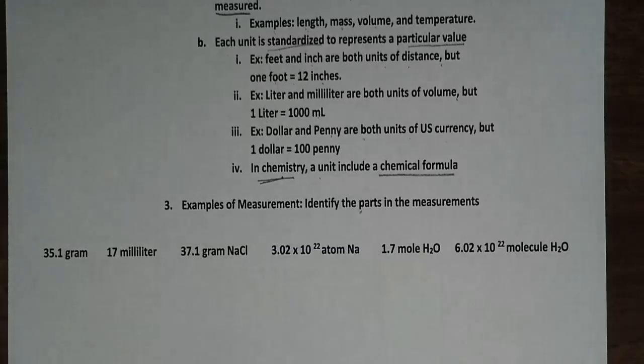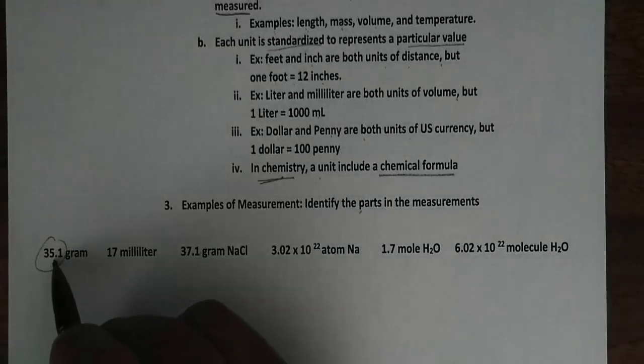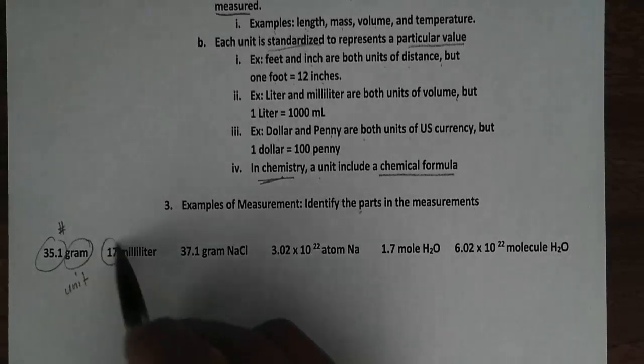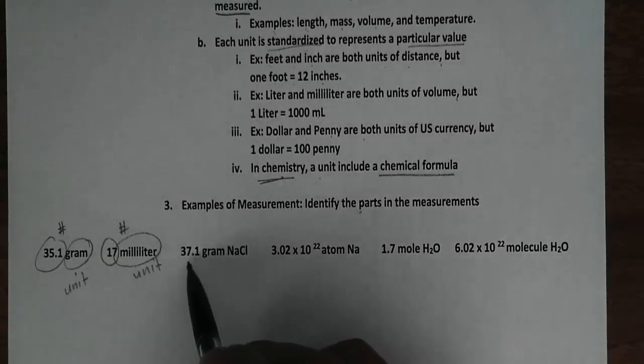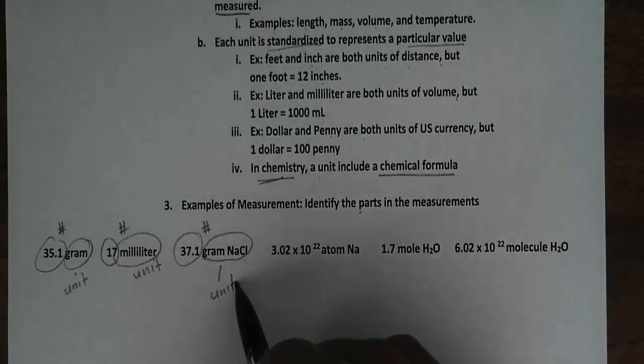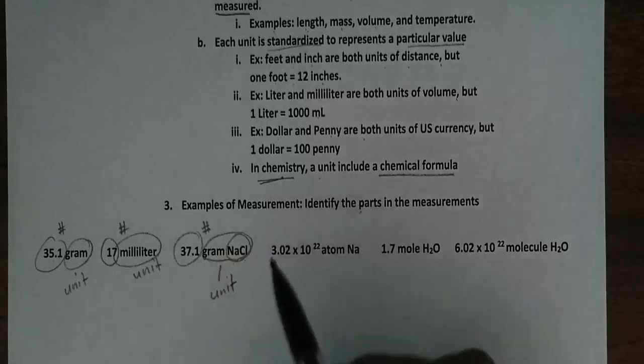Here I have different measurements. Let's identify the parts in the measurement. We have 35.1, that would be the number. Gram, that would be the unit. 17 would be the number. This would be the unit. 37.1 gram NaCl. This number is the number part. And gram of NaCl, that would be the whole entire unit that has the chemical formula. So NaCl is the chemical formula.